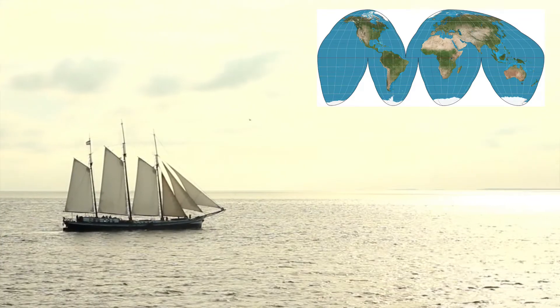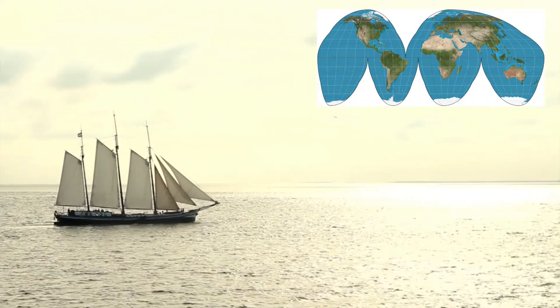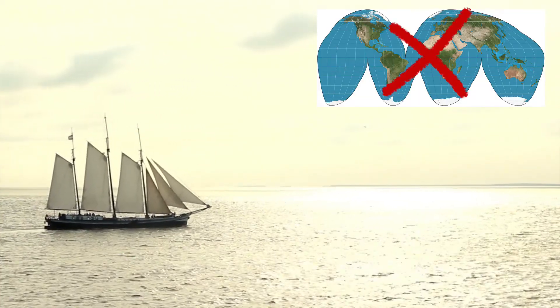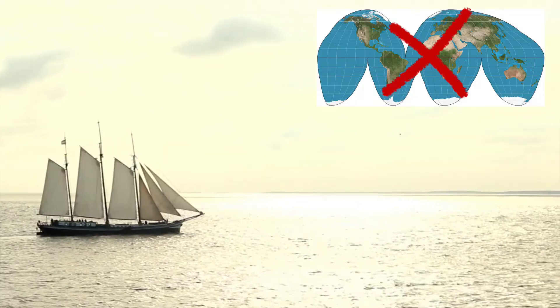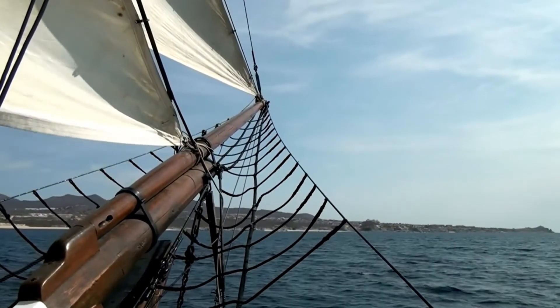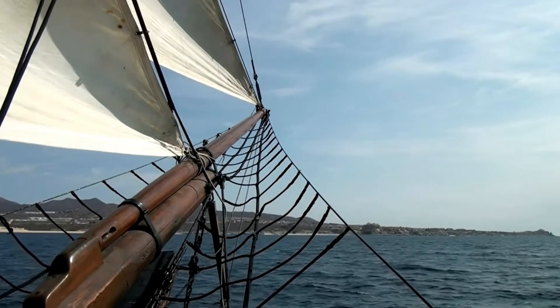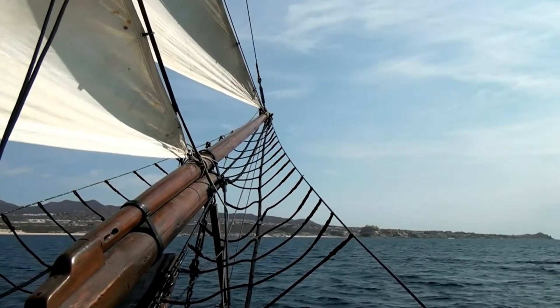But hundreds of years ago, sailors said maps with cuts in them were too complicated, and the sailors were afraid of getting lost at sea if they used those maps. The sailors preferred to have maps that had no cuts, even if that meant some countries would be the wrong size or shape.